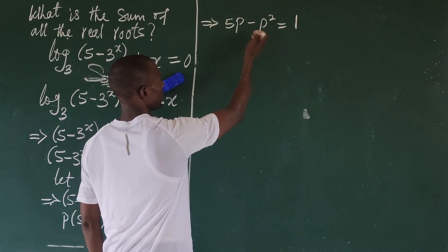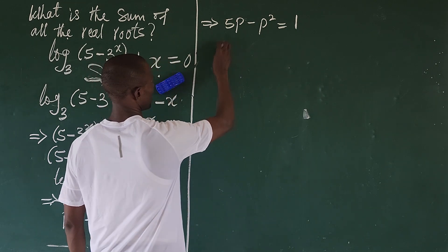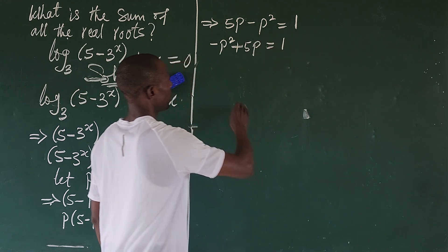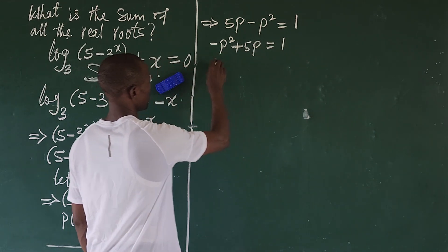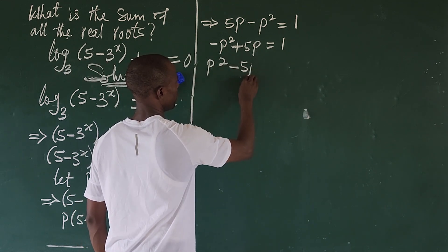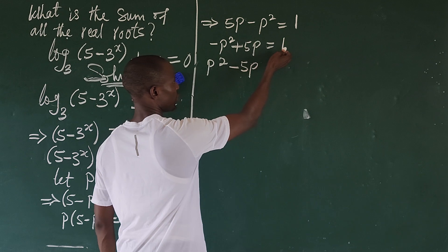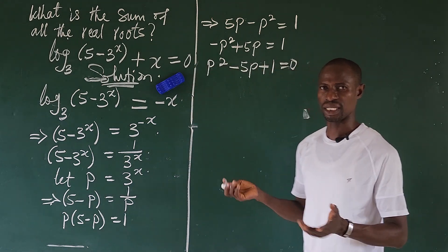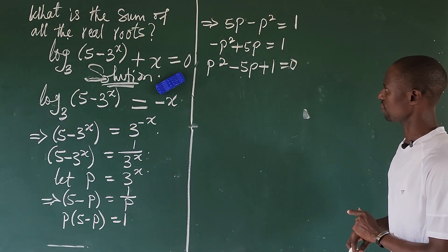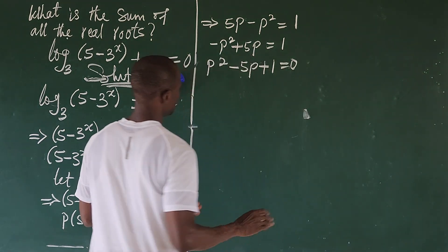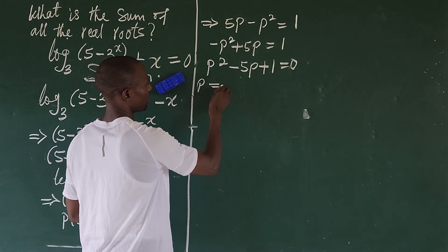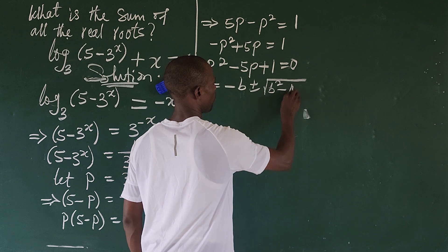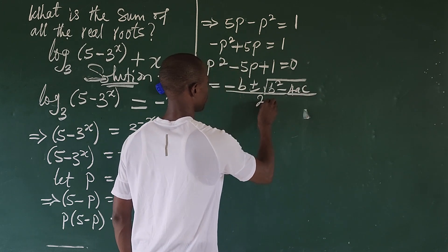We can rearrange this. Bringing terms across gives us minus p squared plus 5p equal to 1. We multiply through by minus 1, so we're going to end up with p squared minus 5p plus 1 equal to 0. So this is a quadratic equation. We can solve this quadratically. We use the formula method: p equals minus b plus or minus the square root of b squared minus 4ac, all over 2a.